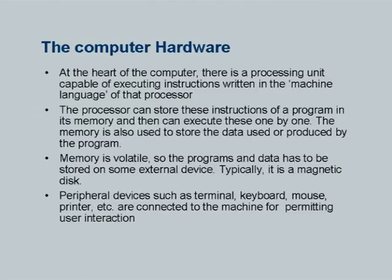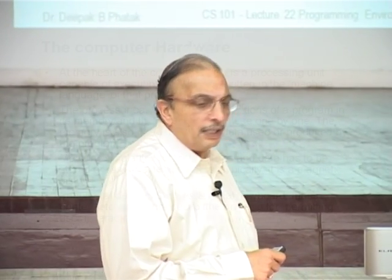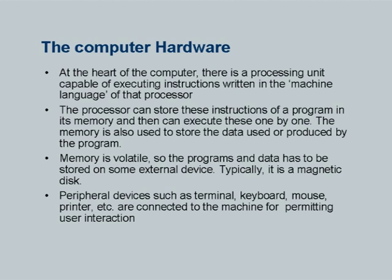With this limited background, we quickly examine the complete stack of the computing system in front of us, starting with a little bit of hardware. We will explain the details of this hardware towards the end of this course. Right now, it is sufficient to identify a few basic elements. The first and foremost is the heart of a computer: the processor — a processing unit which is capable of executing instructions written in the machine language. That is the computer's heart.